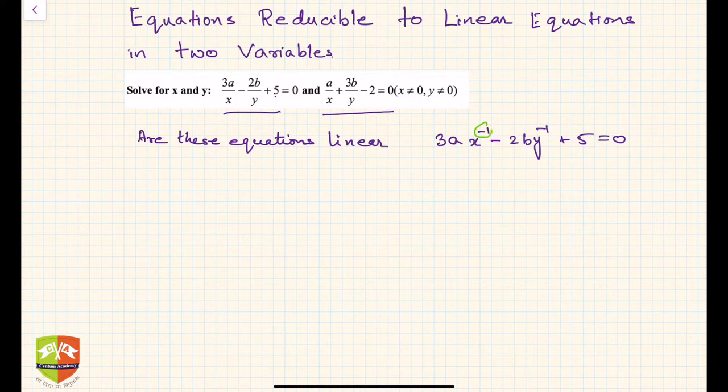If you see the power is negative 1 on the variable, but for linear equations we have studied that power must be 1. If it is anything but 1, then it is not a linear equation. So how do we reduce it to linear form then?